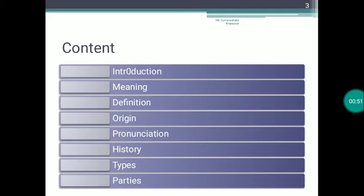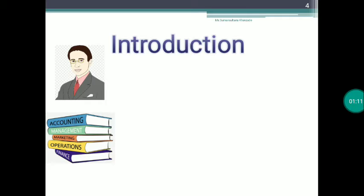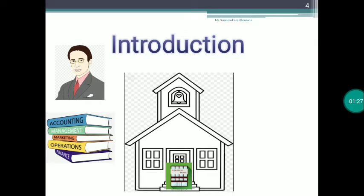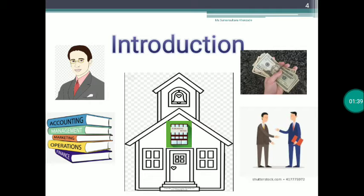Let's get started with an example. There is a person called Mr. X — he is a writer who has written a book called Financial Accounting. Now, can he himself print and sell the book? No. Therefore he goes to a publishing house. The publisher, Mr. Y, agrees to print and sell the books, and in return agrees to pay 50 rupees per thousand books sold. This agreement amount is called royalty.